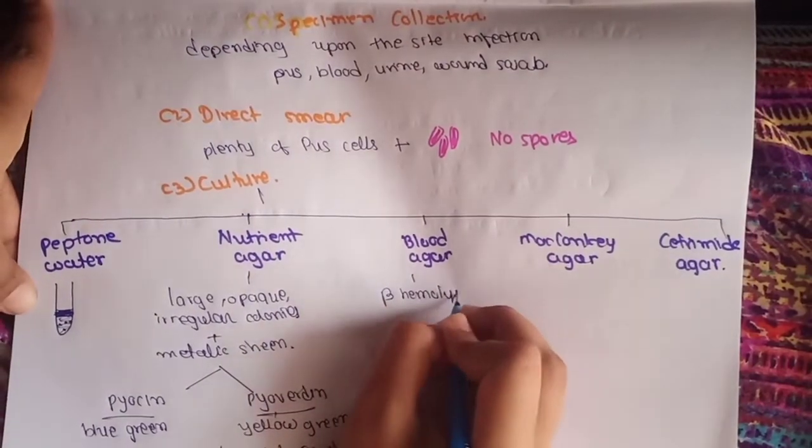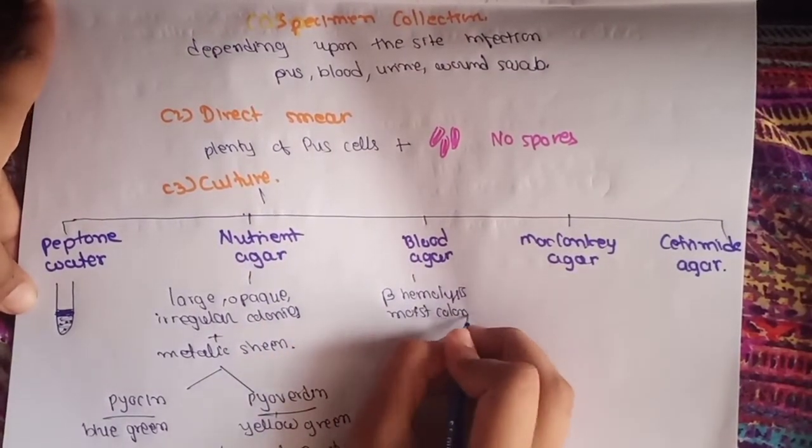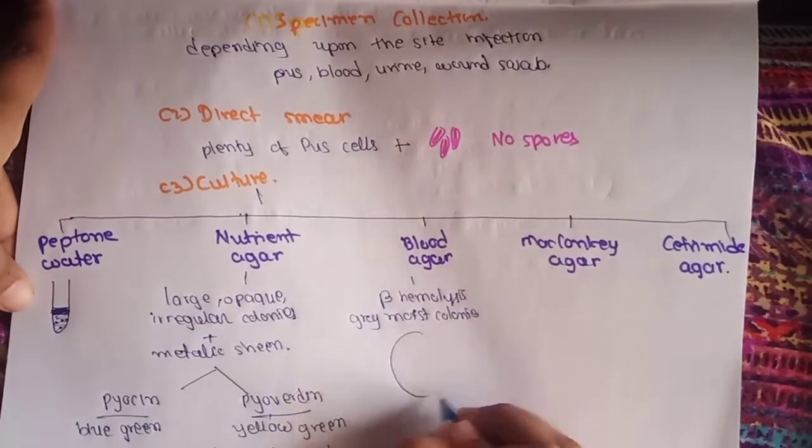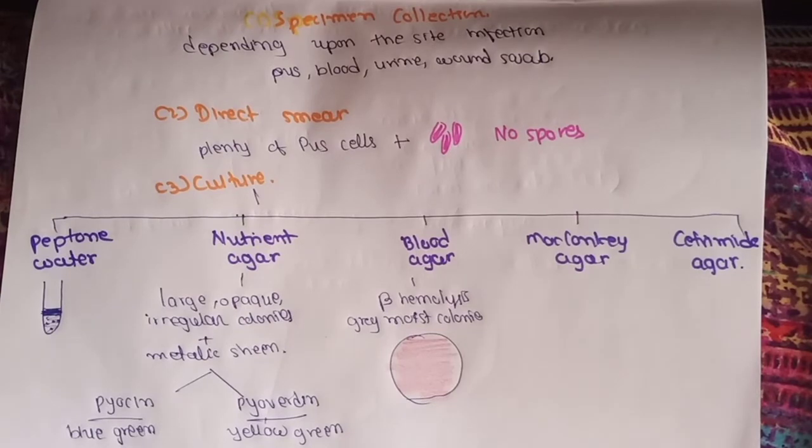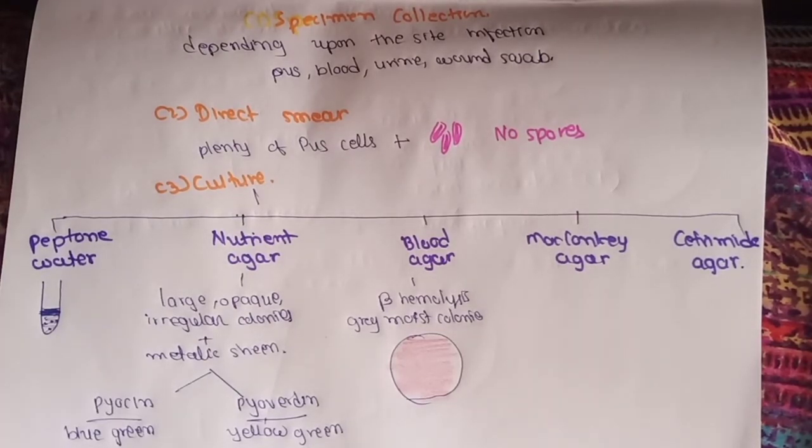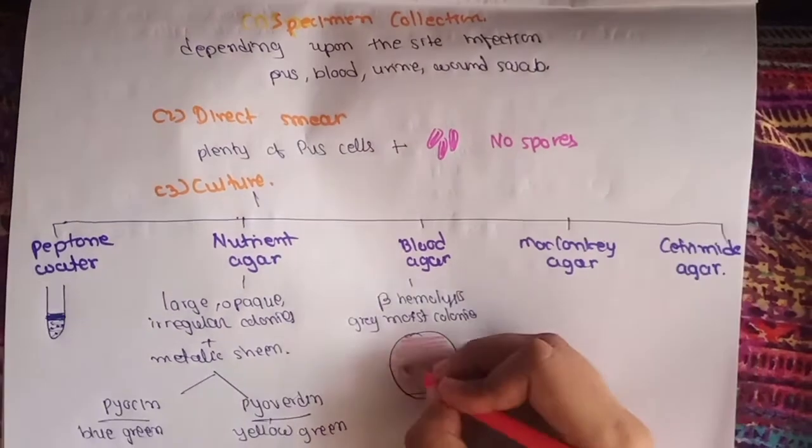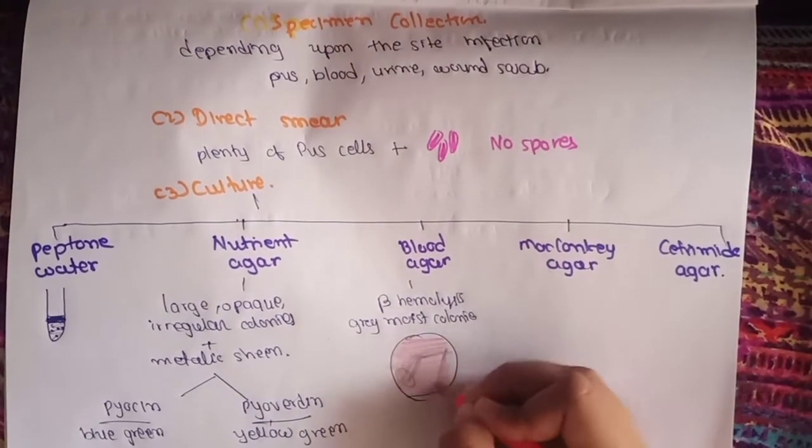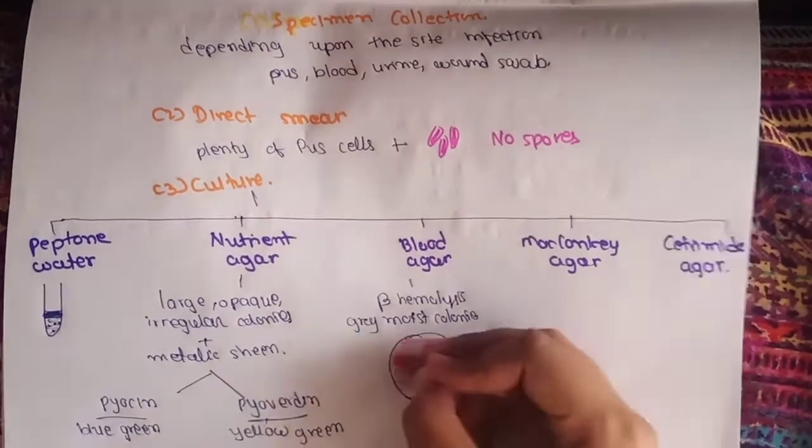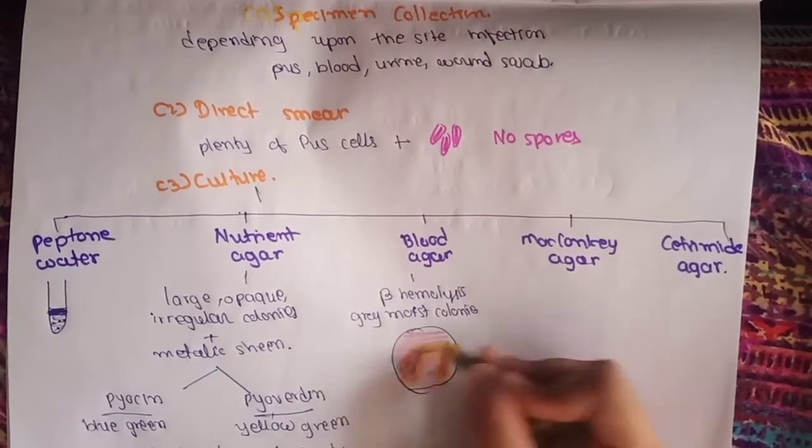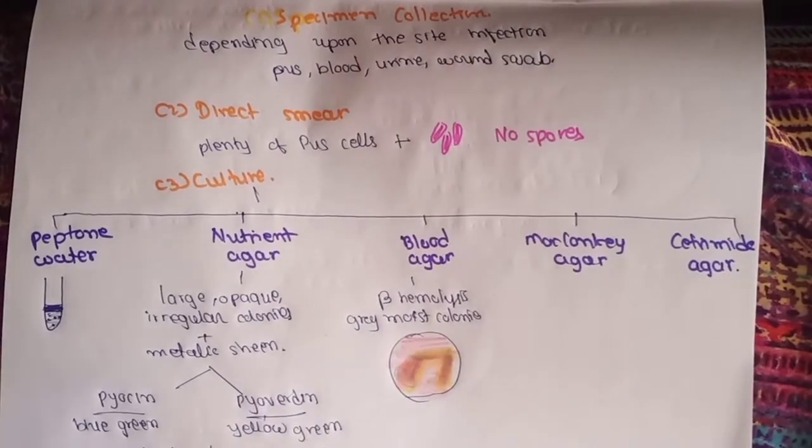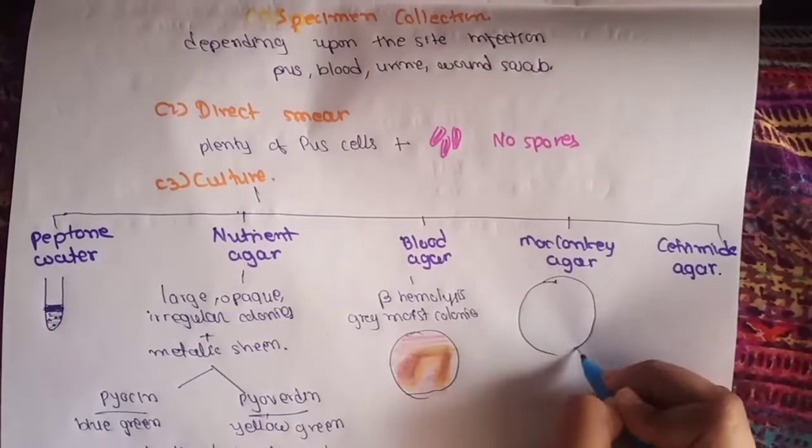On blood agar, it will show beta-hemolytic gray moist colonies. So imagine this is blood agar and we incubate Pseudomonas at 37 degrees Celsius for 24 hours aerobically, and we will find gray moist colonies showing beta-hemolysis.